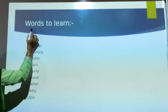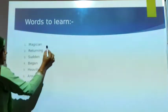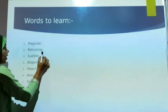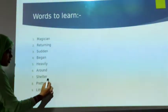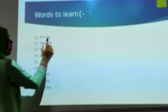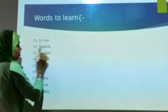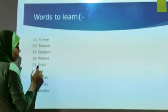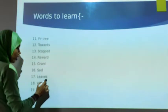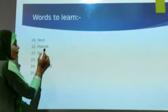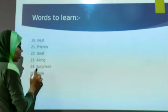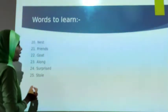Words for the lesson. Number 1: magician — means charlatan. Then: returning — going back; sudden — achanak (unexpected); begin — start; heavy link — mohajose; around — aspas; shatter — to break; pretty — sundar (beautiful); little — small; furtree; towards; stop; reward — grant; sad; leaves; pieces; needles; gnash — means gursla; friends; God; along; surprise; and snow — means choygana.